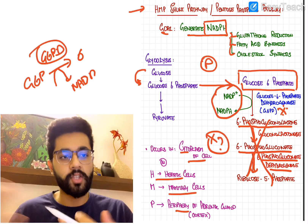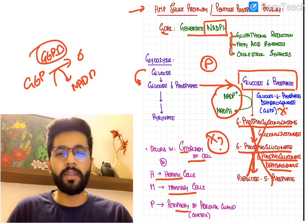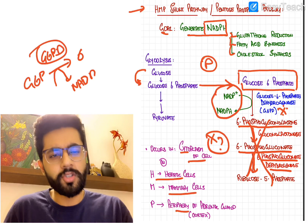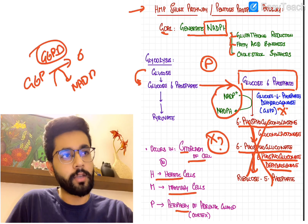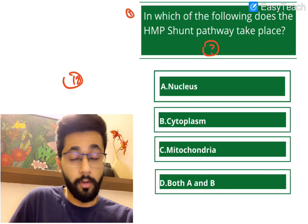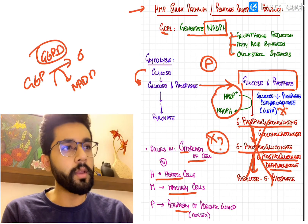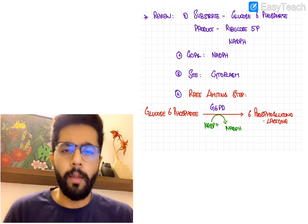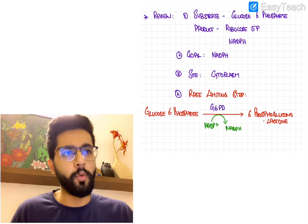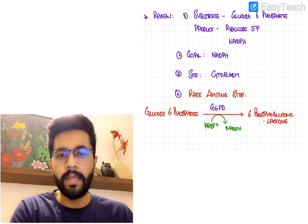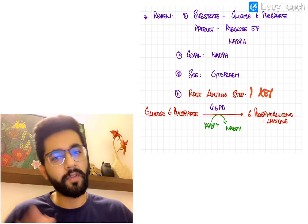You can remember the sites with the mnemonic HMP: Hepatic cells, Mammary gland cells, and the Periphery of the adrenal gland, which is the adrenal cortex. So it occurs in the cytosol. The answer to this question is B — cytoplasm, because G6PD is only present in the cytoplasm. When approaching any biochemistry cycle, I recommend only studying things under four headings rather than memorizing the whole pathway.